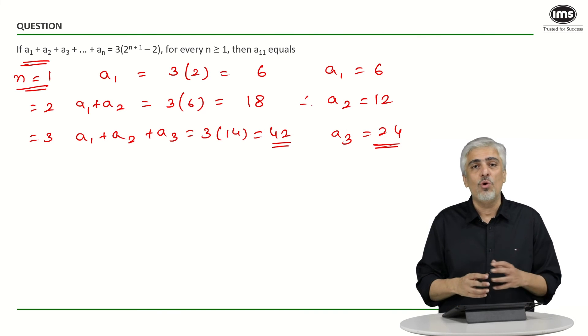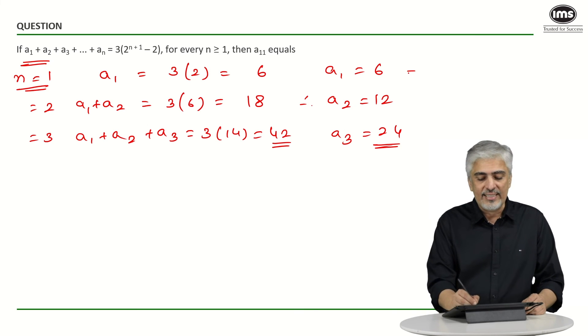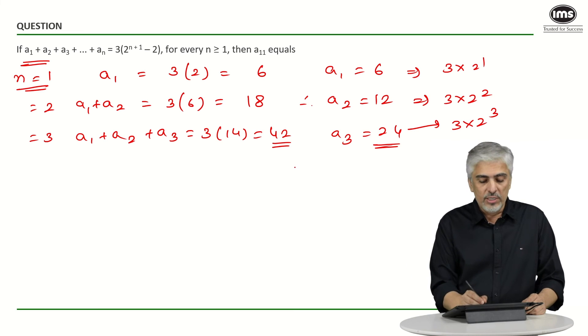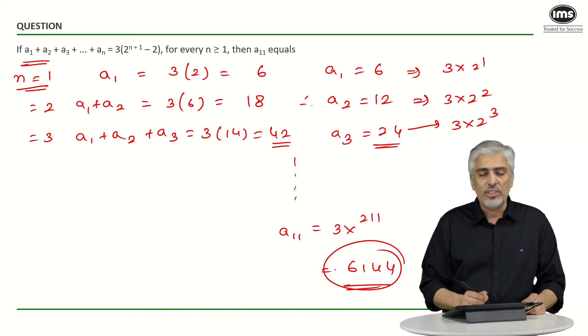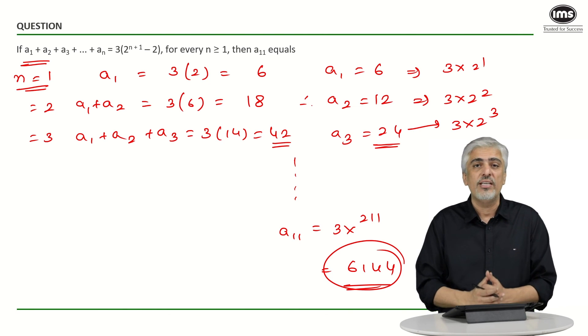So from this step, if you want, you can just keep doubling and keep going ahead and get to the answer or just realize that this is nothing but 3 into 2 raise to 1. This is 3 into 2 raise to 2. This is 3 into 2 raise to 3 and so on if I go ahead. So a third term is 2 raise to 3. So the 11th term would be 3 into 2 raise to 11 which we just did behind was 6144.